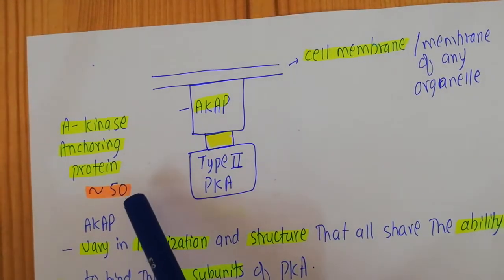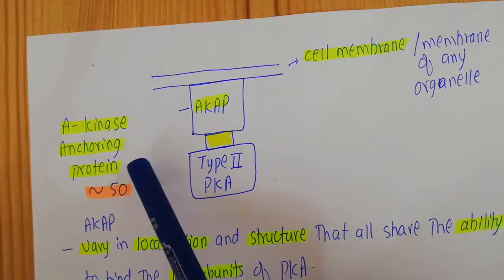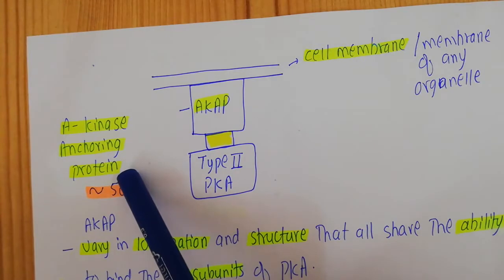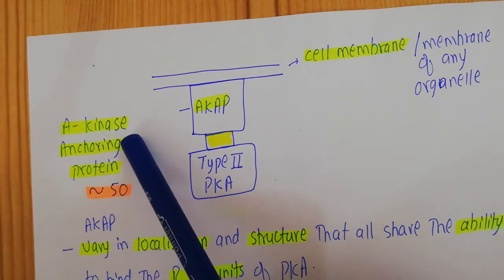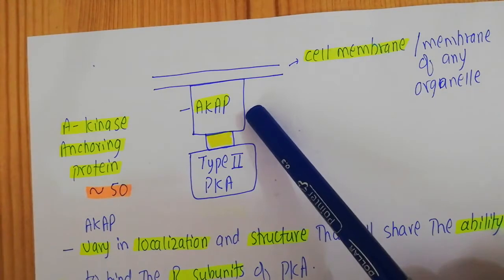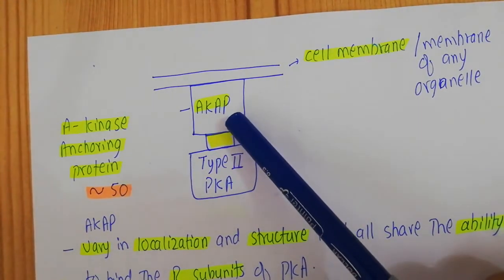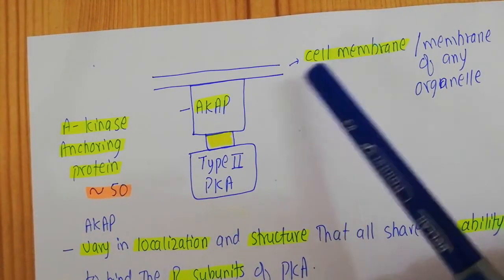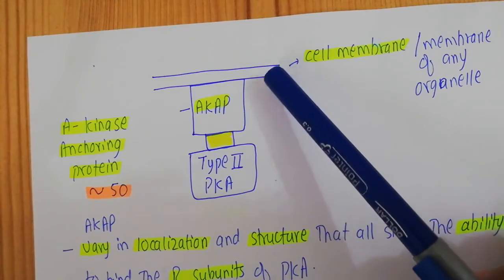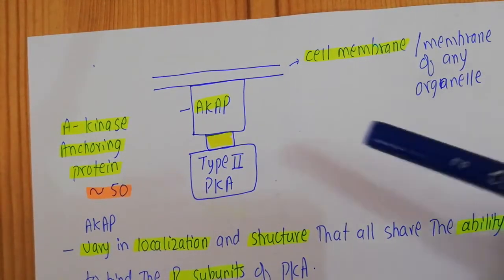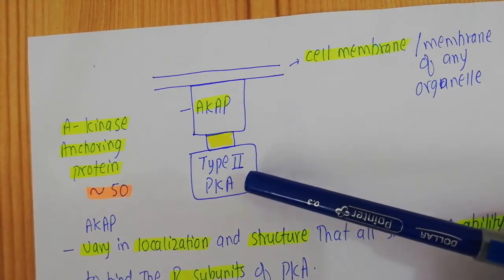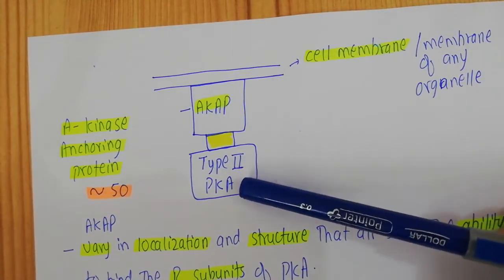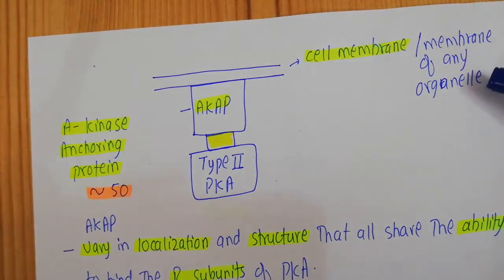In this video I want to focus on the A kinase anchoring protein. As the name indicates, these are anchoring proteins for protein kinase A. The A kinase anchoring proteins, or AKAPs, are bound to the cell membrane — represented here by two lines — or to the membrane of any other organelle. AKAPs attach the type 2 protein kinase A to the cell membrane or organelle membranes.